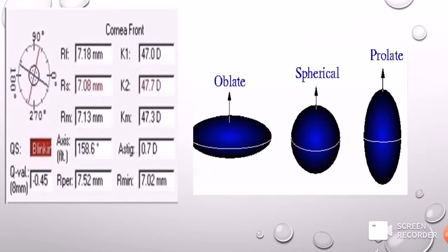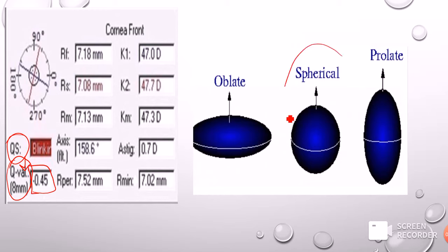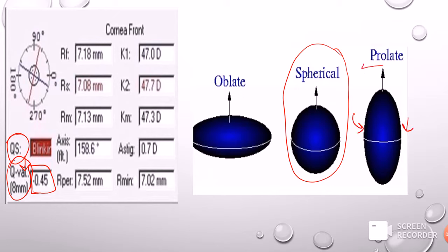On the printout, just below the quality specification we have the Q value. A normal sphere has the central part more spherical and peripheries flatter — that is the prolate shape. The oblate shape is when the center is flat and readings are more than 0.